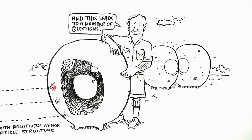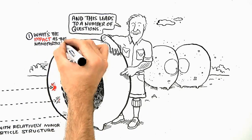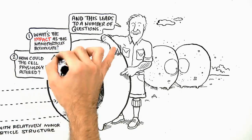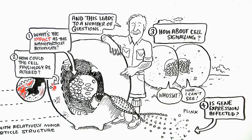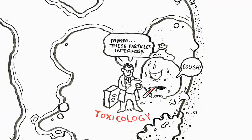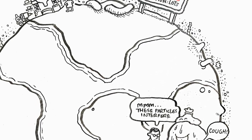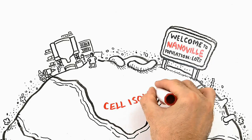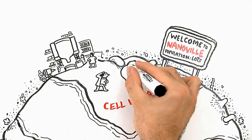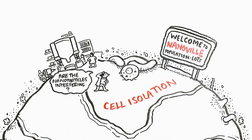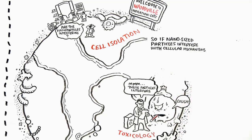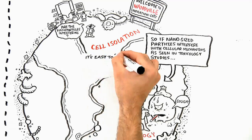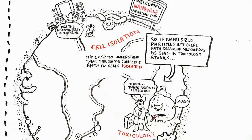And this leads to a number of questions: What impact does nanoparticle accumulation have? How would cell physiology be altered? How about cell signaling? Is gene expression affected? So while toxicologists live on the nano-sized planet, they're in a different discipline than scientists doing cell isolation — like living on a different continent. Because the scientists doing cell isolation are so remote from toxicology, they keep using nano-sized particles without being fully aware of what is happening on the toxicology continent. So if nano-sized particles interfere with cellular mechanisms as seen in toxicology studies, then the same concerns also apply to cells isolated with nanoparticles.